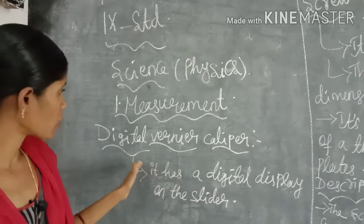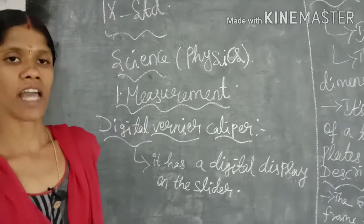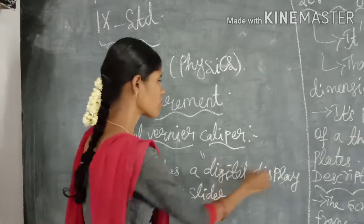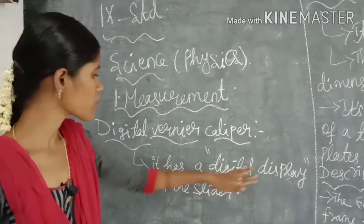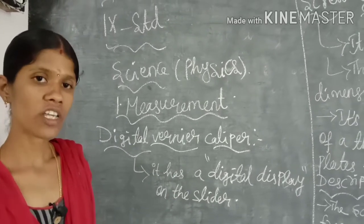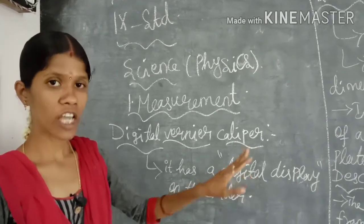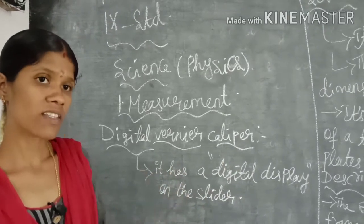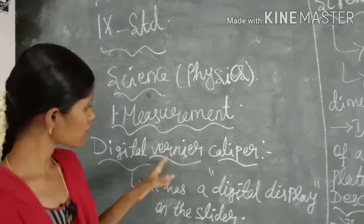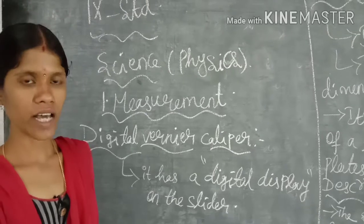To continue that lesson, we are now going to see the digital vernier caliper. We are living in a digital world, so digital vernier calipers are available in shops. The digital vernier caliper has a digital display on the slider, which calculates and displays the measured value automatically. The user need not calculate the least count, zero error, etc.